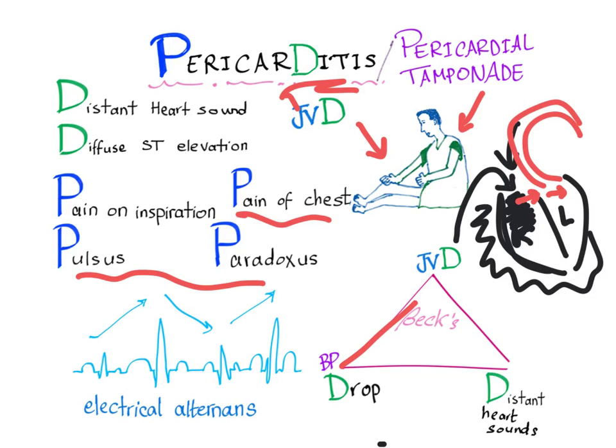Also, we have Beck's triad for cardiac tamponade: jugular venous distension, hypotension, and distant heart sounds.